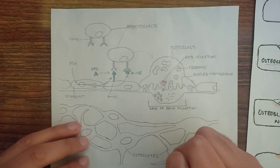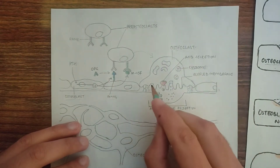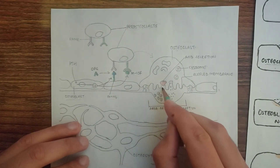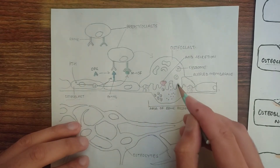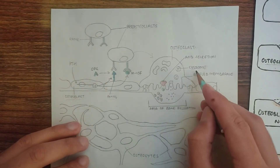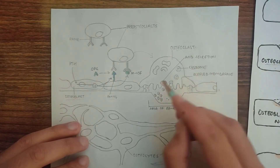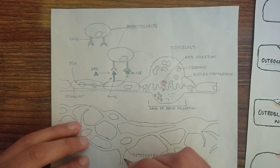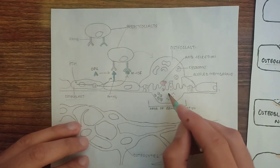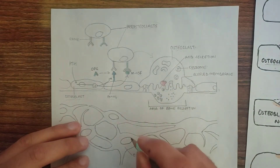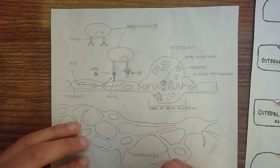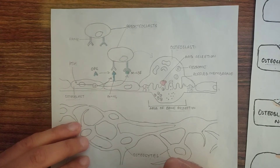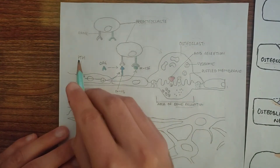Now this mature osteoclast cell is a multi-nucleated cell, and this cell will develop a ruffled membrane — a ruffled border. Through this ruffled membrane, there will be release of lysosomal enzymes, and there is also acid secretion. Wherever these substances are released, bone resorption will be promoted. This is the mechanism by which bone resorption takes place.